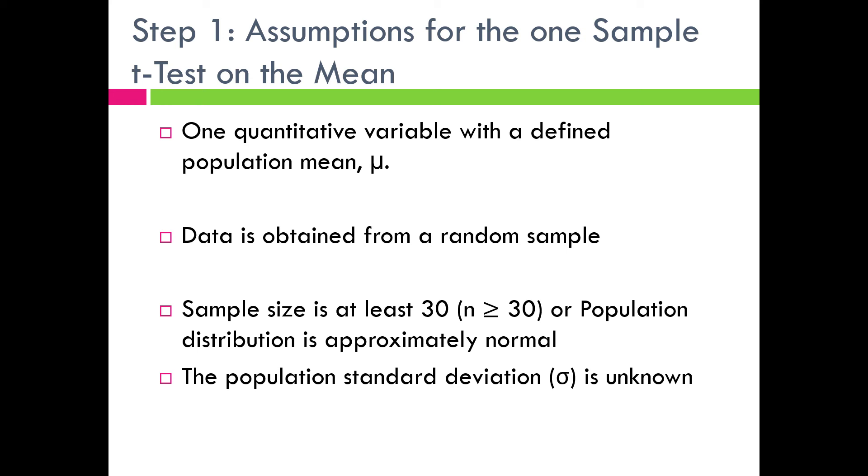Number two, we use data from a random sample. That's pretty important because we're trying to make sure, number one, that the sample is representative of the population where we're getting the data from. And then number two, we want to make sure that everything in that sample is equally likely to be chosen. So in other words, we're trying to reduce or eliminate bias with this randomization process.